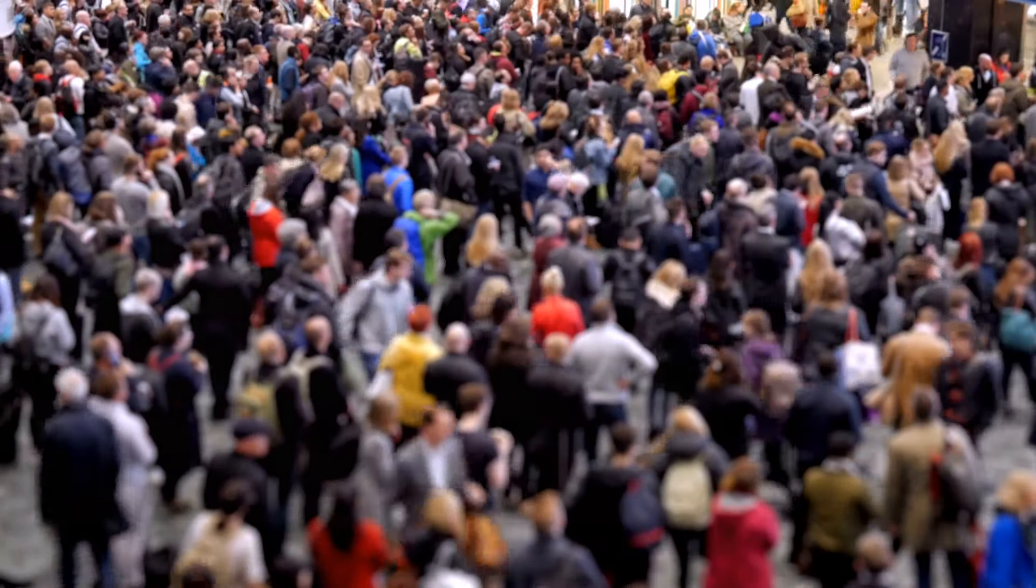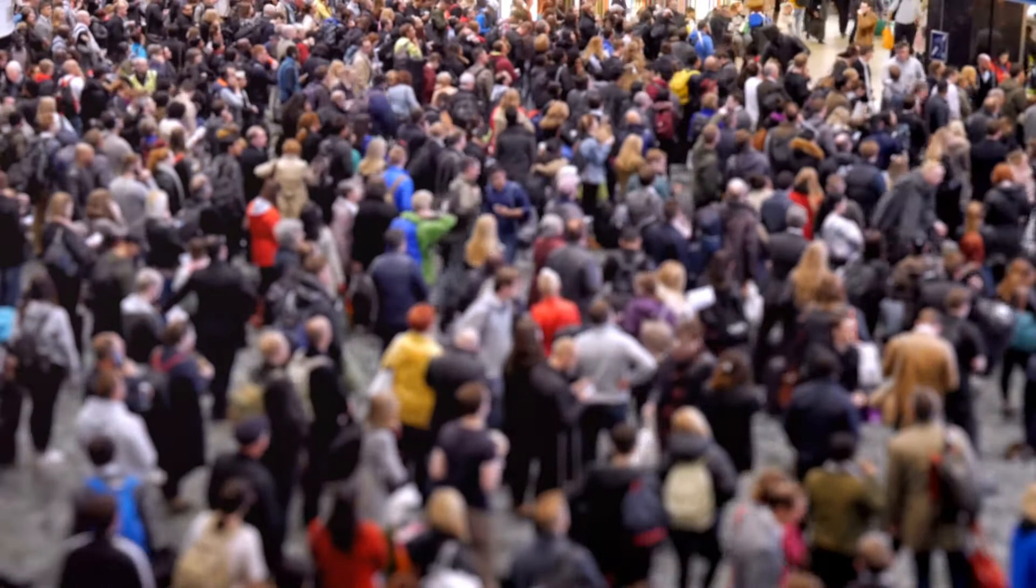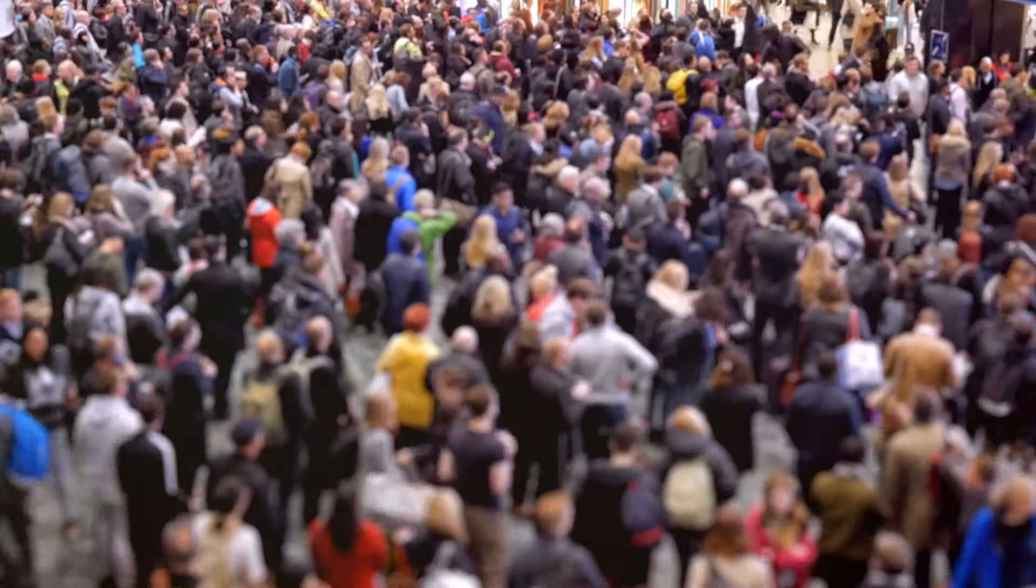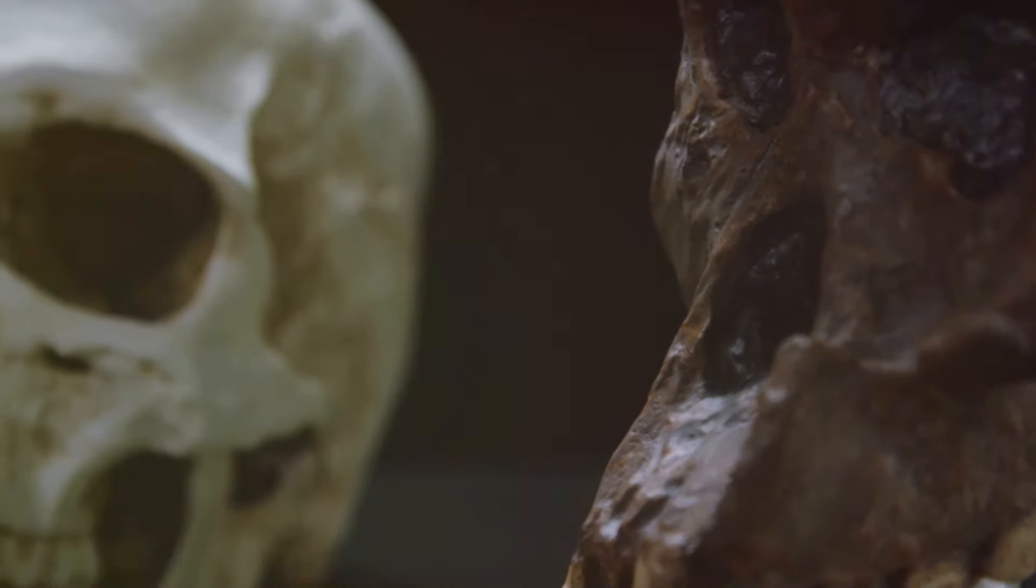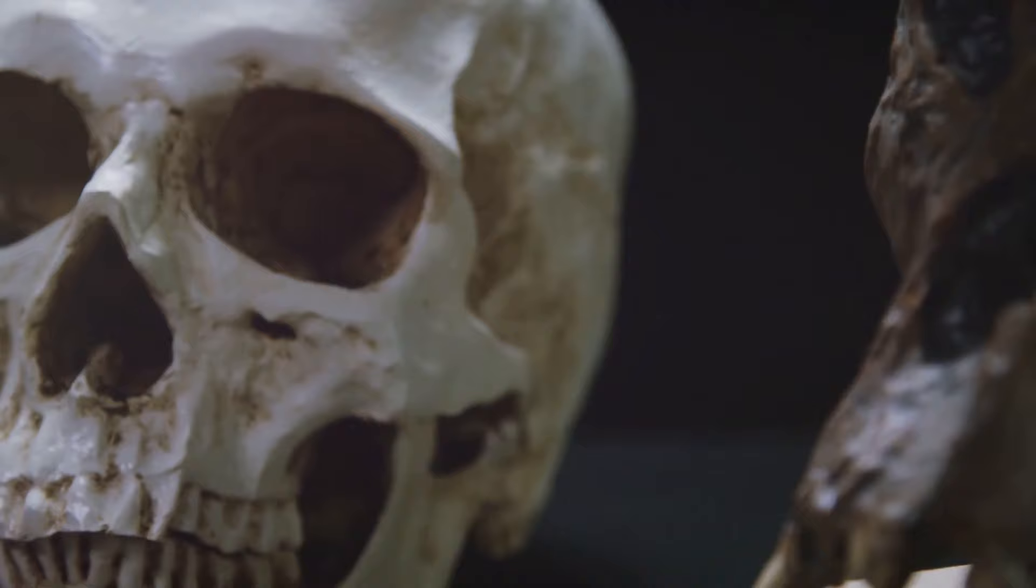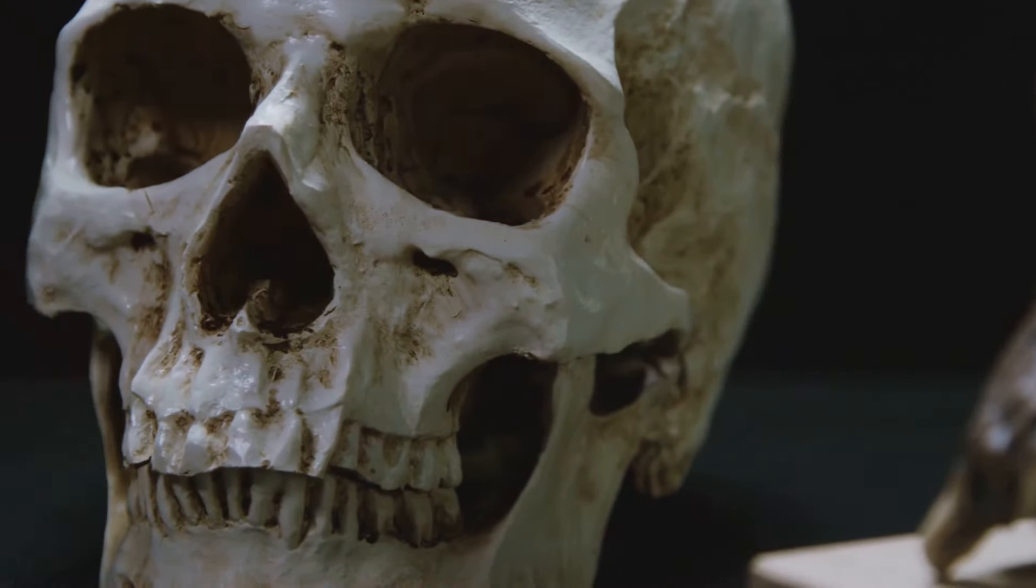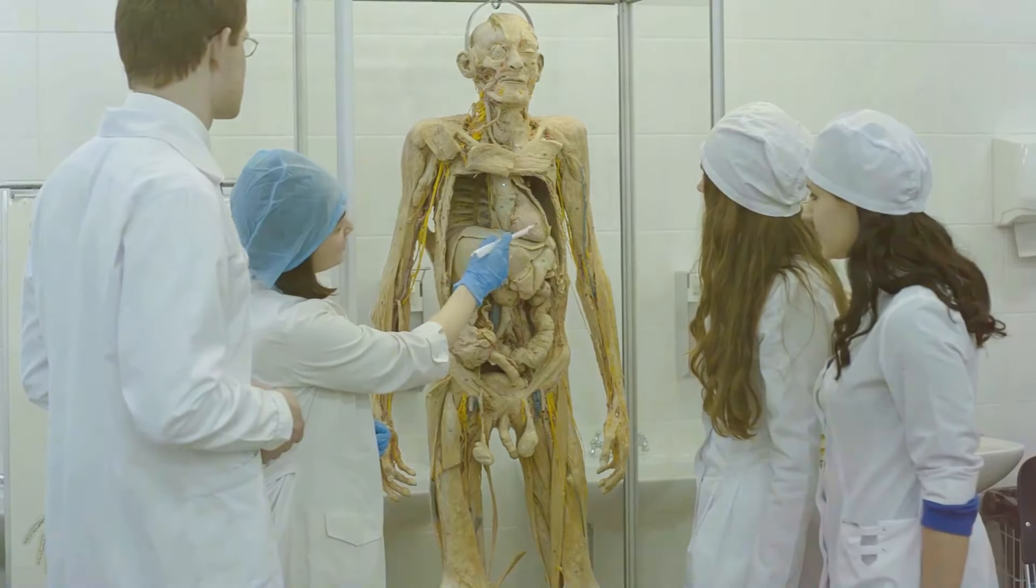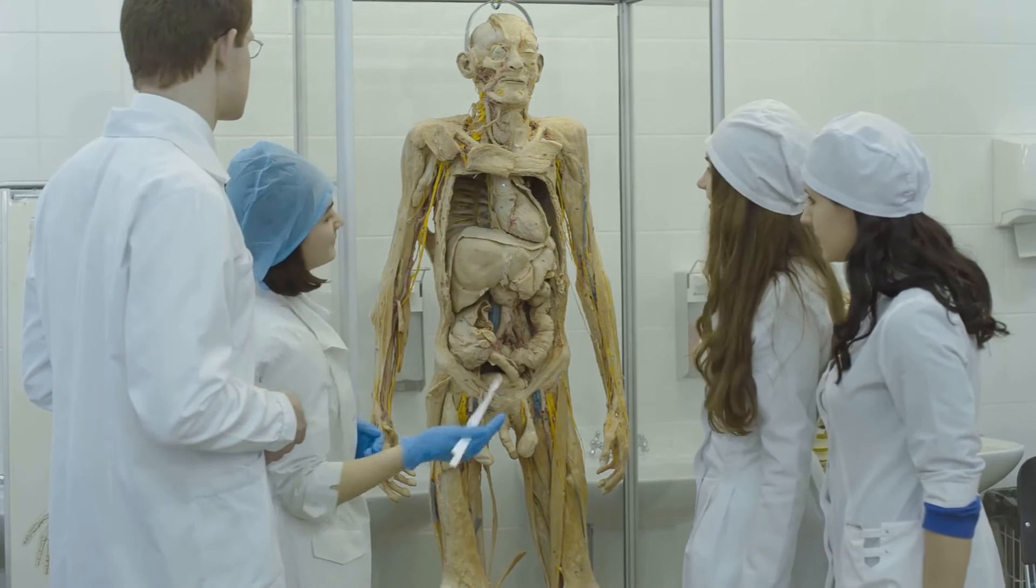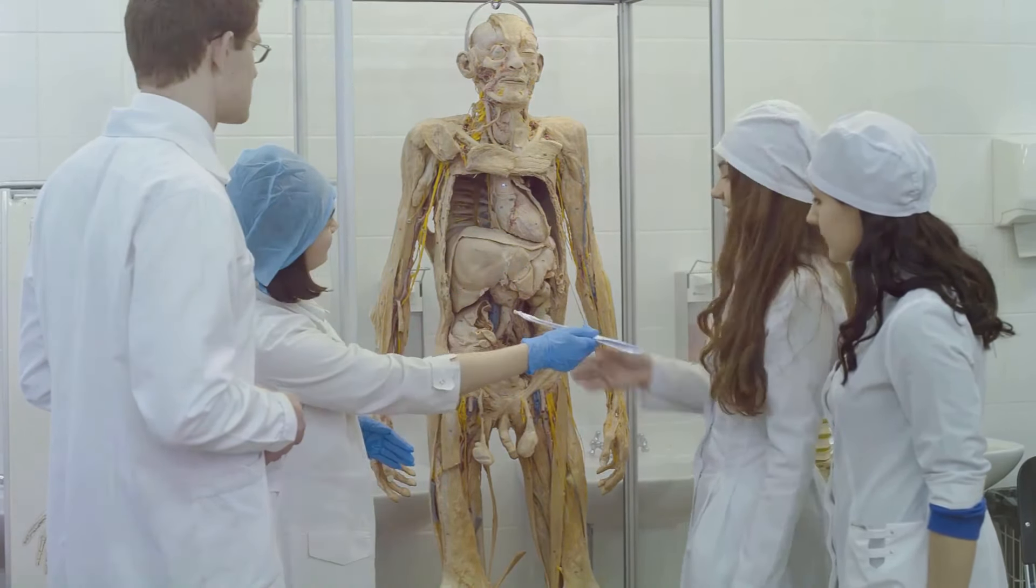We are a species that has adapted to a wide range of environments, from the icy tundras to the scorching deserts. We've always assumed we're native to this planet. Our evolutionary history suggests a long and complex journey of adaptation and survival. But many scientists have argued that some aspects of human biology don't quite fit with Earth's environment. This has led to intriguing theories about our origins.